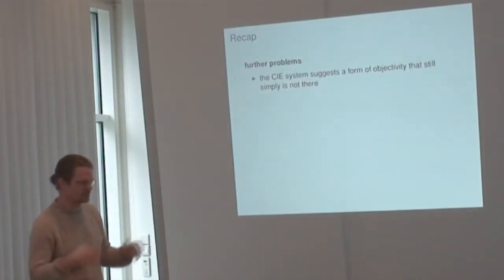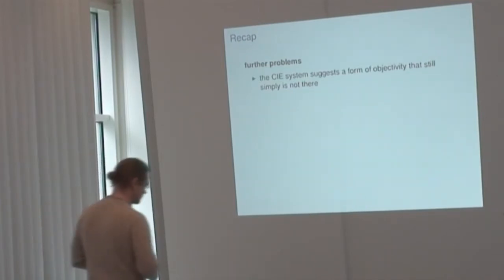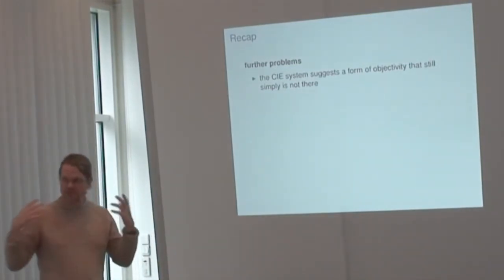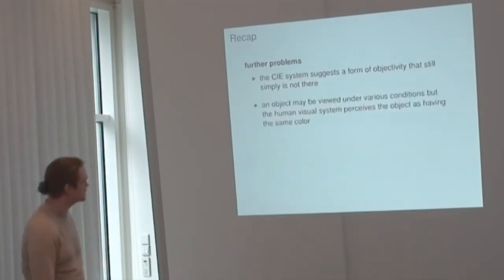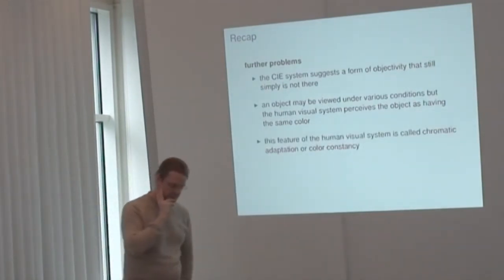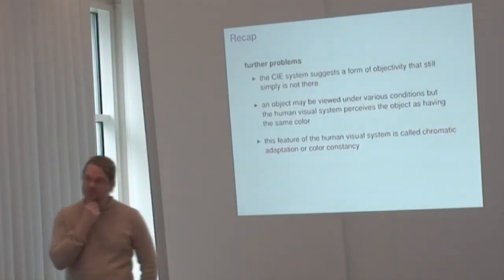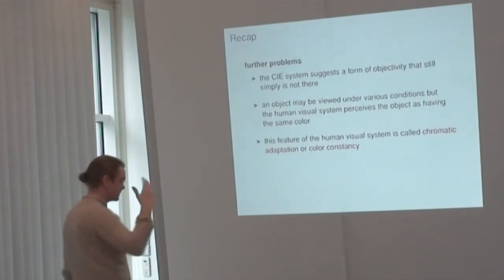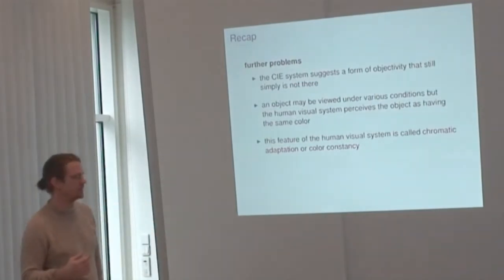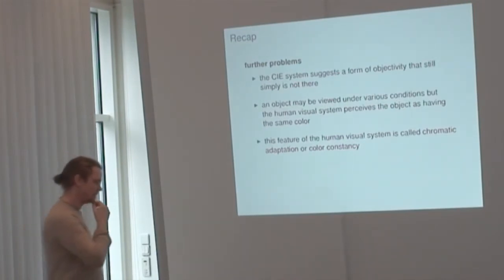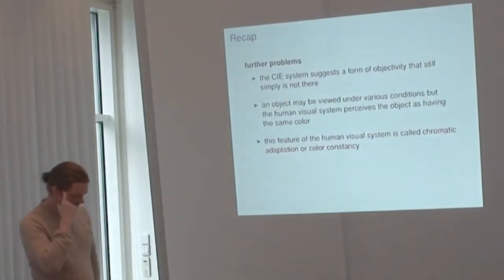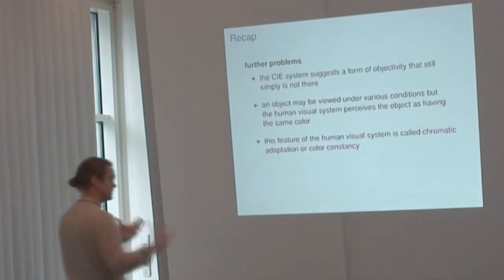Although the gamut was created from perceptual experiments and statistical averages and looks objective, it is not. There are perceptual effects the brain performs automatically and unconsciously, which evolved because humans had to survive in nature. These are responsible for many of the visual illusions we know.